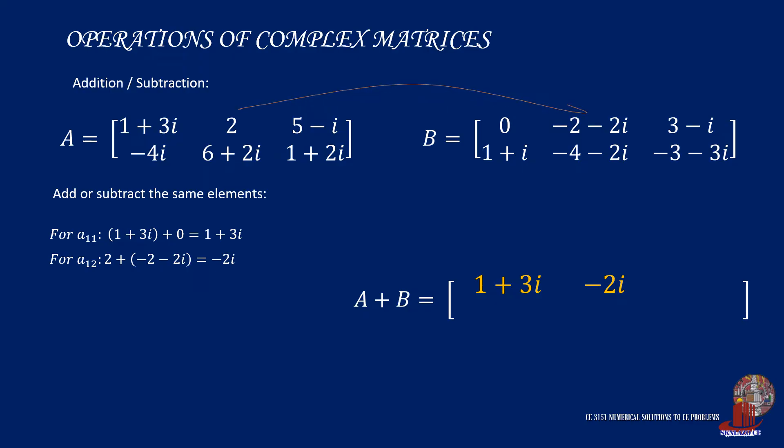Element 1,2 for A plus B is computed by adding 2 and negative 2 minus 2i, where the real numbers cancel out to leave negative 2i. For the next element 1,3, we combine 5 minus i with 3 minus i and that gives us 8 minus 2i.